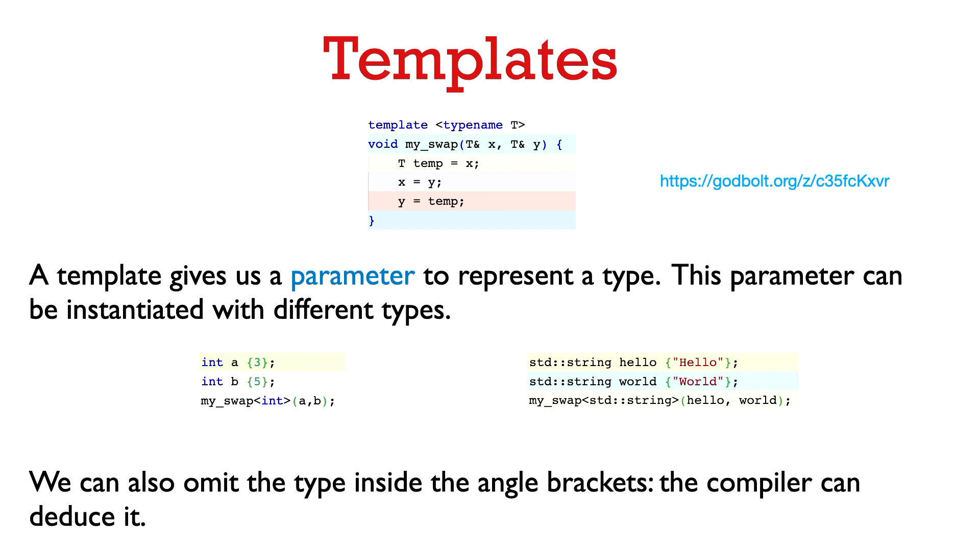Okay, so the code stays the same except now we just use T as the type. And we can instantiate that with ints by saying my_swap angle bracket int, a comma b. Or we can instantiate that with strings or any other type.